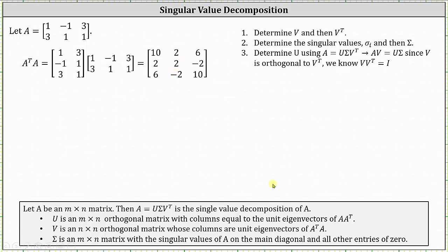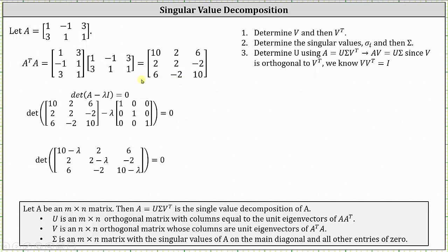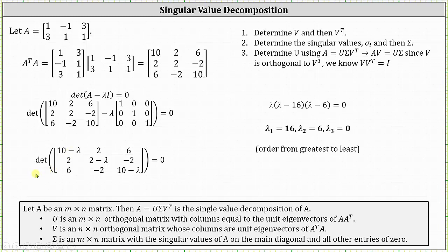Because we're looking for unit eigenvectors of this three by three matrix, the next step is to determine the eigenvalues by solving the equation: the determinant of the matrix (A transpose·A minus lambda times the identity) equals zero. Simplifying and finding the determinant gives us the characteristic equation. The factored form is lambda times (lambda minus 16) times (lambda minus 6) equals zero.